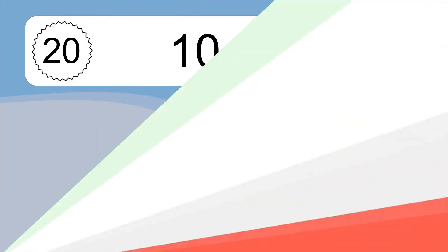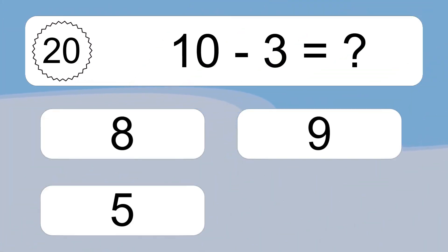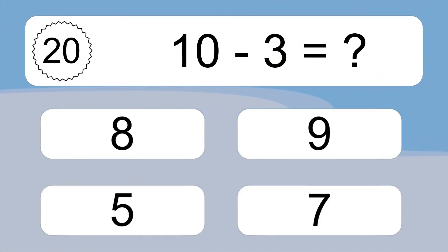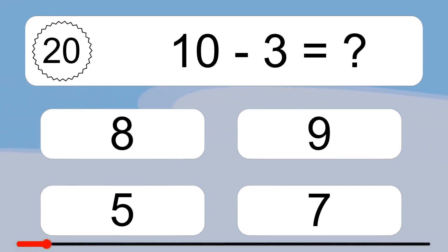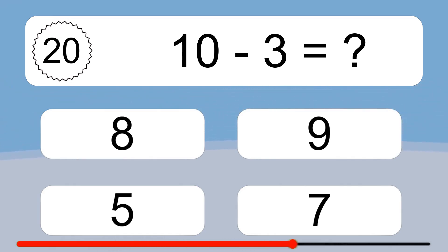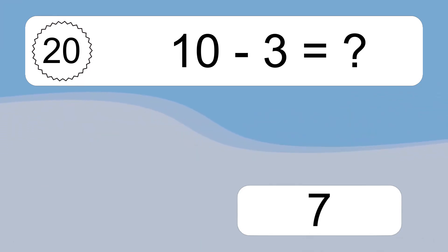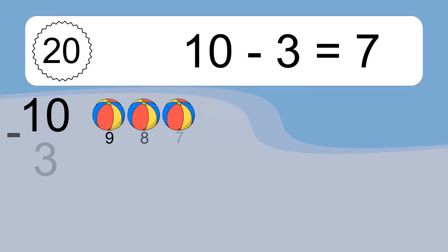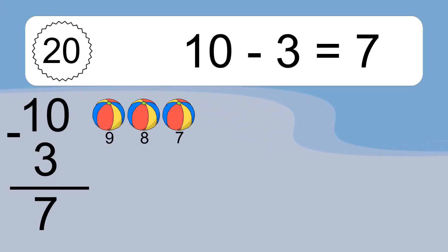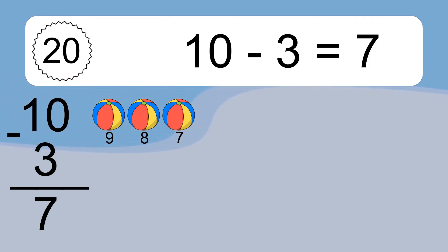10 minus 3 equals what? 10 minus 3 equals 7. Let's count it! 9, 8, 7.